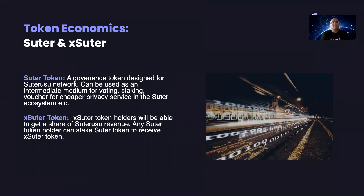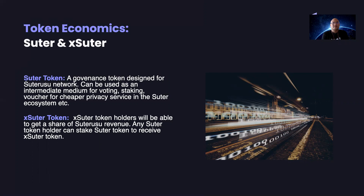Here's the token economy. The S3O token is a governance token designed for the S3O user network. It can be used as an intermediary medium for voting, staking, and also as a voucher for cheaper privacy services in the S3O ecosystem. In the future, S3O token holders will be able to pay a much lower service fee for privacy services. We also have another token called XS3O, which is specifically designed for revenue sharing. We do charge a service fee from users using our product, and all these service fees will be distributed to XS3O holders. Any S3O token holder can stake their S3O token to receive XS3O tokens and earn a certain share of the revenue from our ecosystem.